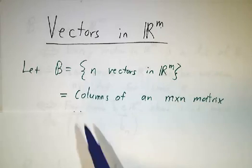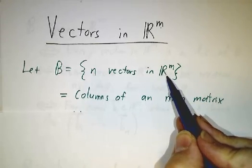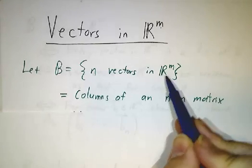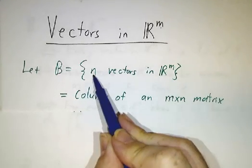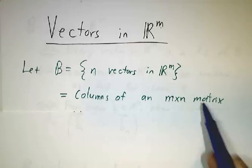You can think of those, each vector in R^m is a column with m entries. And if you lay them side by side, you can think of your n vectors as being the columns of an m by n matrix.